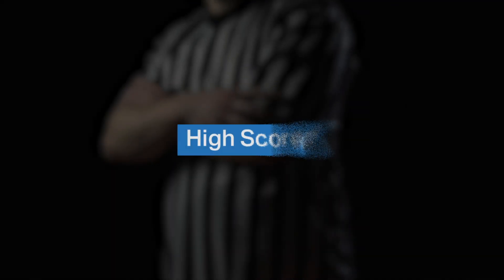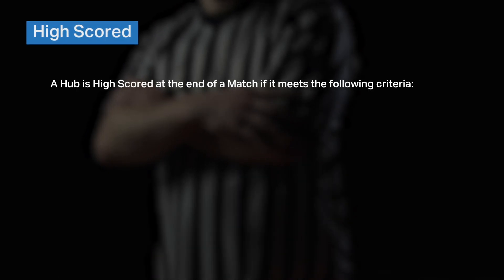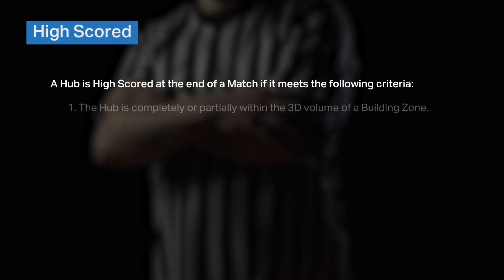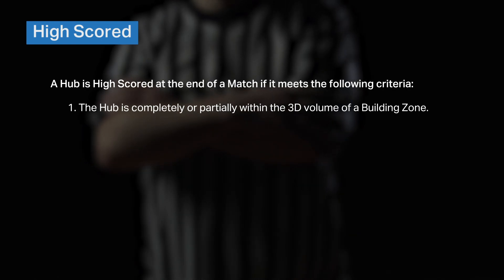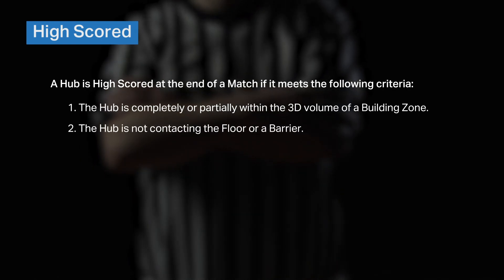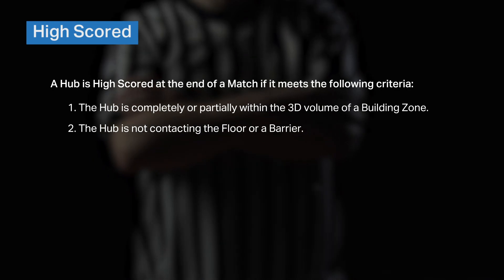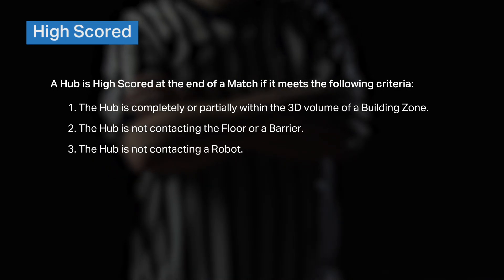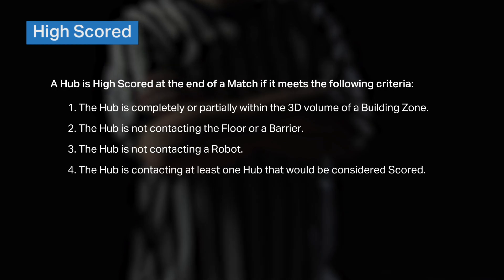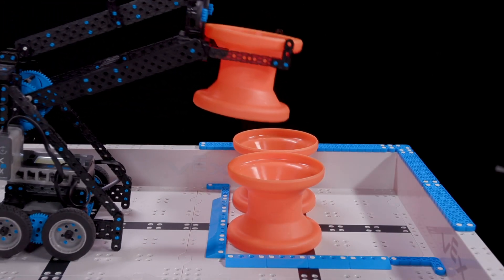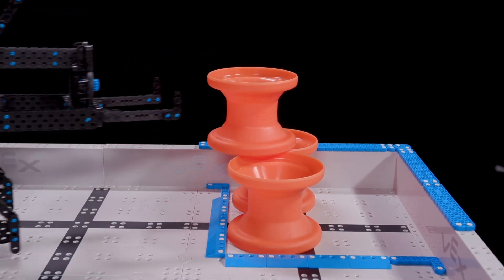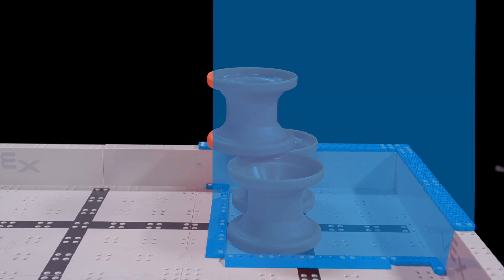Next up is high-scored hubs. A hub is high-scored at the end of a match if it meets the following criteria: One, the hub is completely or partially within the 3D volume of a building zone. Two, the hub is not contacting the floor or a barrier. Three, the hub is not contacting a robot. Four, the hub is contacting at least one hub that would be considered scored. For point one, this can usually be checked visually. If the hub is breaking the vertical plane of the barriers at all, then it counts.